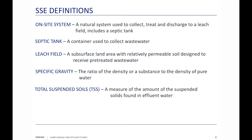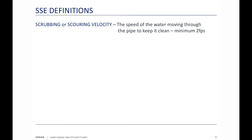Scrubbing or scouring velocity is the speed of water moving through the piping system to keep it clean, with a minimum of two feet per second. In a fresh water system, slower is fine, but when moving water through a sewage system you want at least two feet per second. That velocity helps scour or scrub the sidewalls inside the pipe so stuff doesn't cling and plug it up.